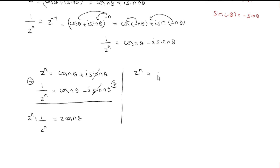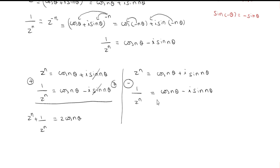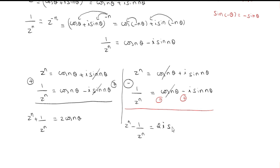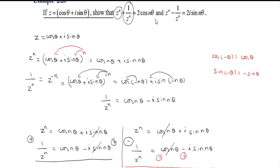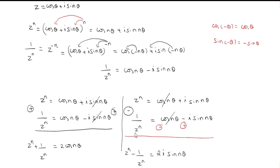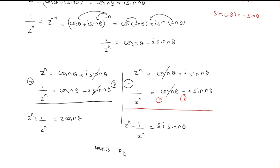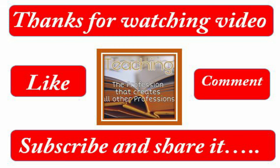For the second part: z^n equals cos(nθ) plus i sin(nθ), and 1 divided by z^n equals cos(nθ) minus i sin(nθ). Subtracting the second from the first, the cosine terms cancel and we have z^n minus 1 divided by z^n equals 2i sin(nθ). This completes the second proof. Hence proved.